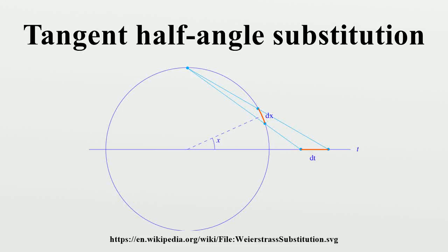In integral calculus, the tangent half-angle substitution is a substitution used for finding antiderivatives, and hence definite integrals, of rational functions of trigonometric functions.